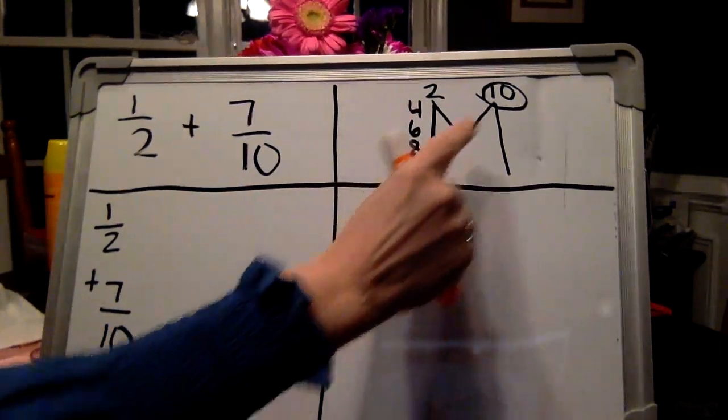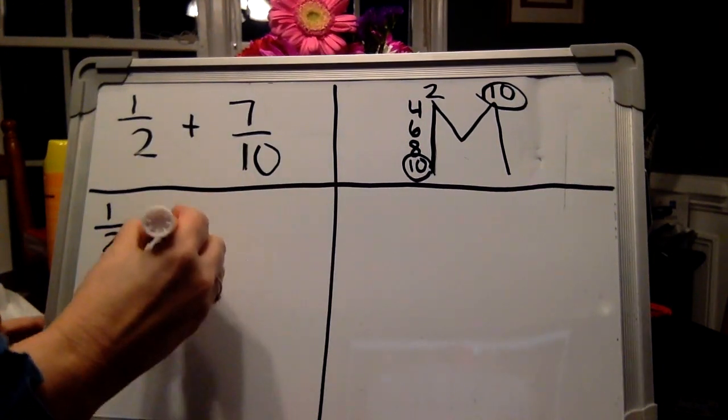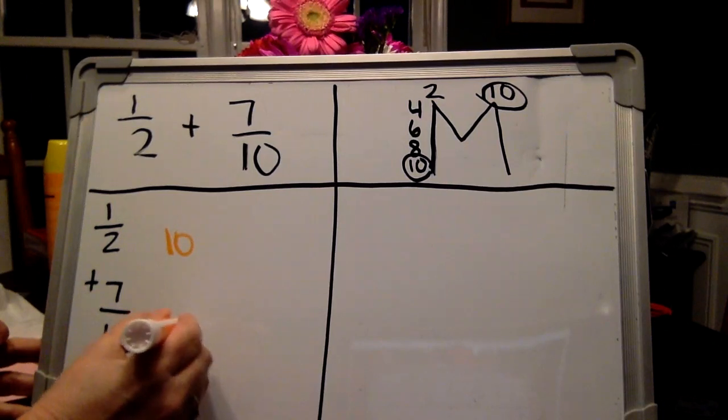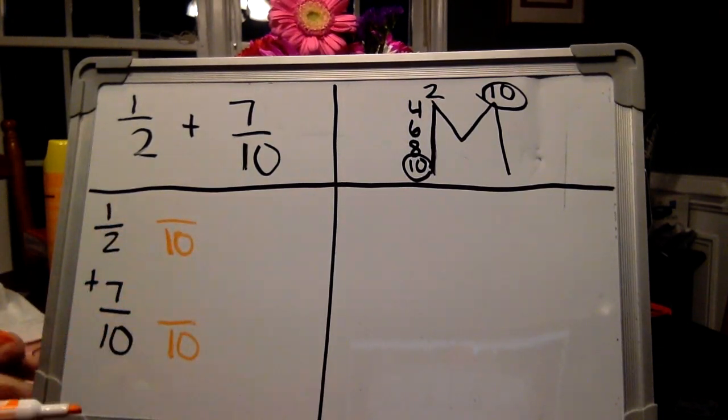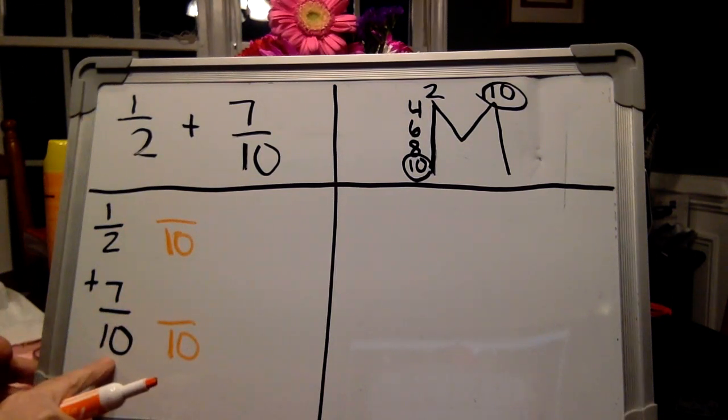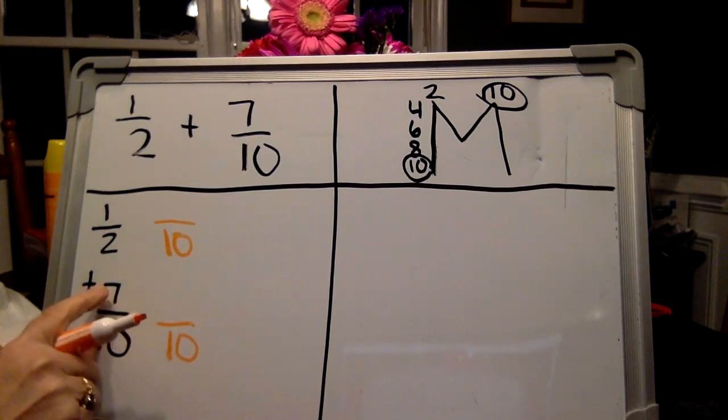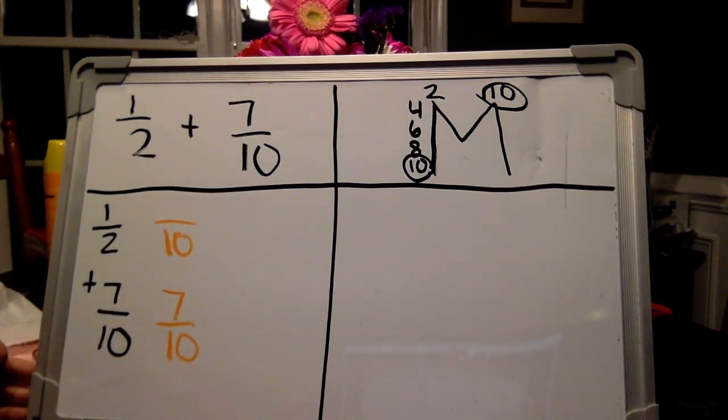So since we looked up here and we found that ten was our new denominator, both of our fractions are both going to have ten as their denominator. All right, let's start with this one since it's already a ten. Since these denominators are the same, then we can just copy our numerator over. That's an easy one.